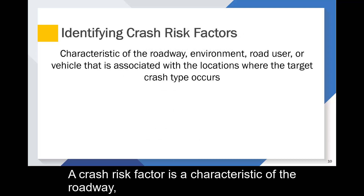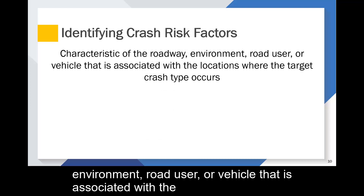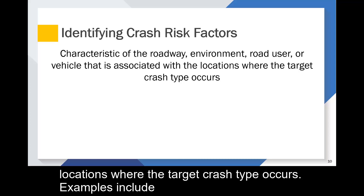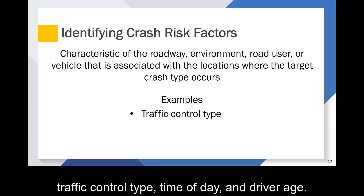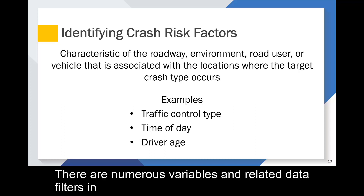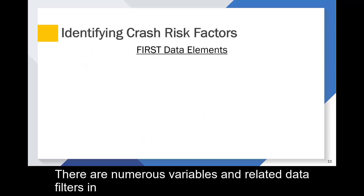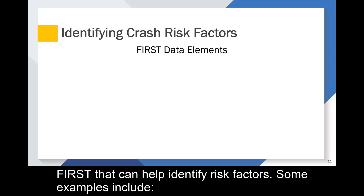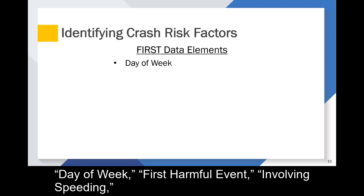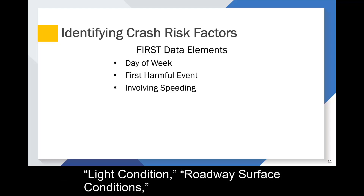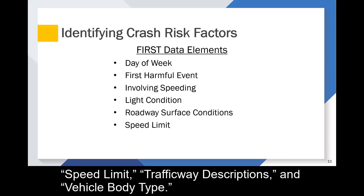A crash risk factor is a characteristic of the roadway, environment, road user, or vehicle that is associated with the locations where the target crash type occurs. Examples include traffic control type, time of day, and driver age. There are numerous variables and related data filters in FIRST that can help identify risk factors. Some examples include day of week, first harmful event, involving speeding, light condition, roadway surface conditions, speed limit, traffic way descriptions, and vehicle body type.